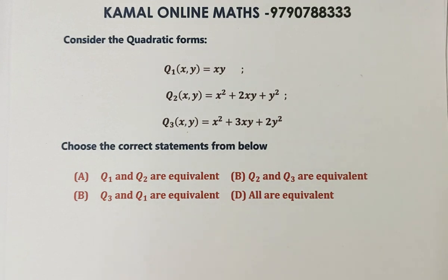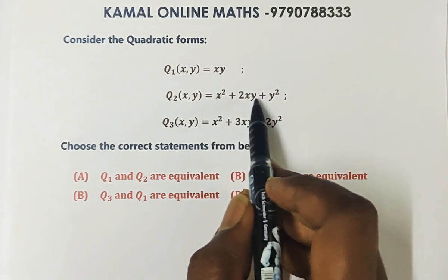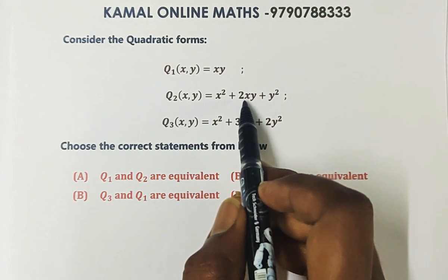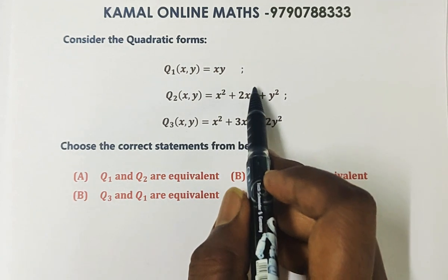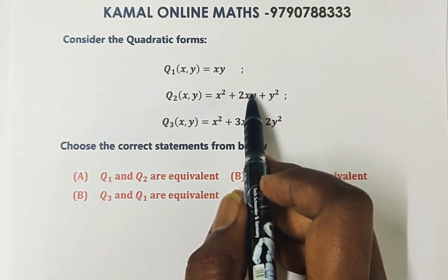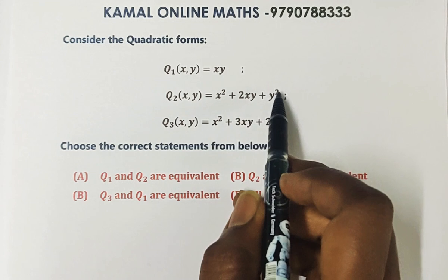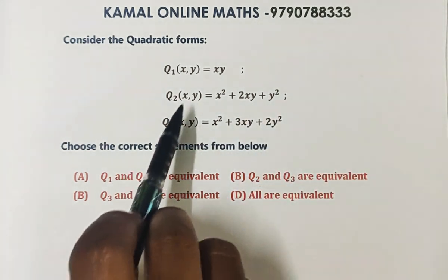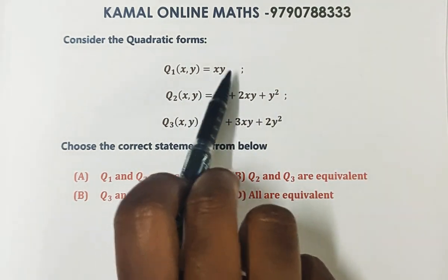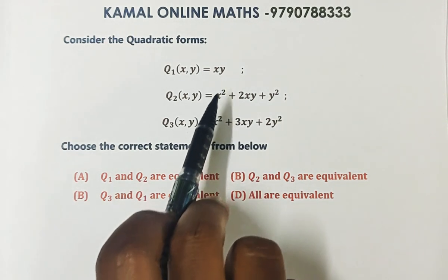The quadratic form is a polynomial of degree two. The terms are of second degree — x², xy where x has degree 1 and y has degree 1 giving combined degree 2, and similarly 2xy and y².